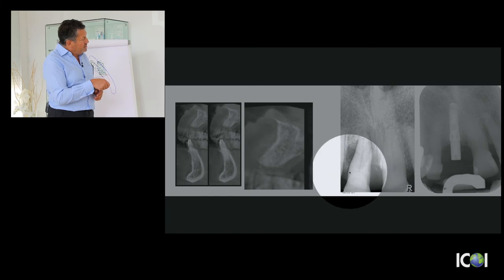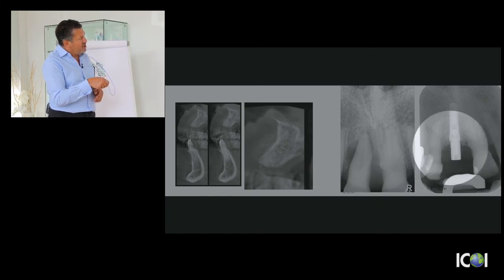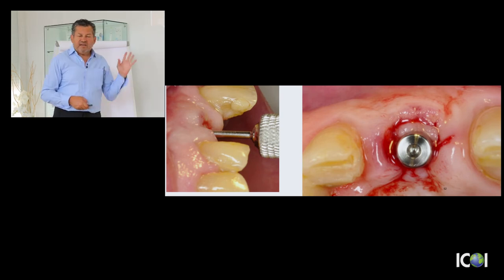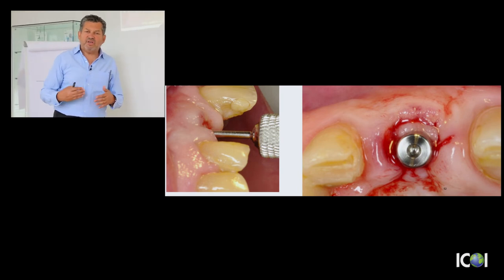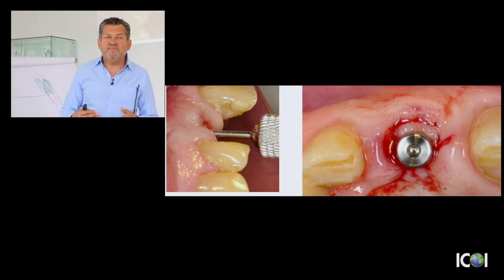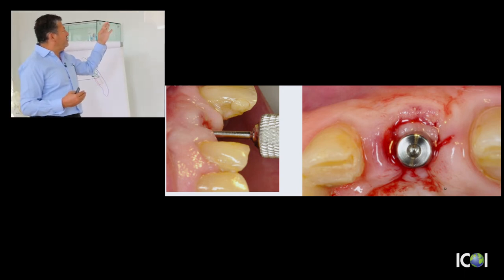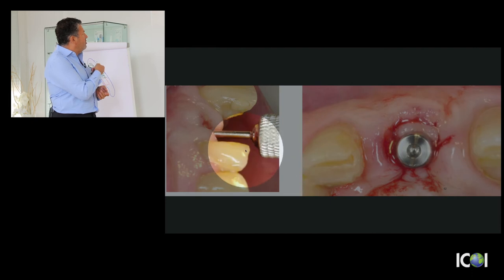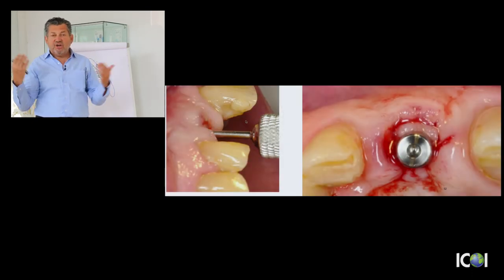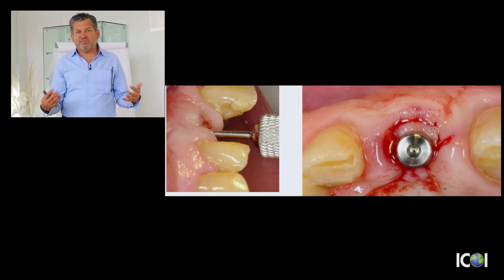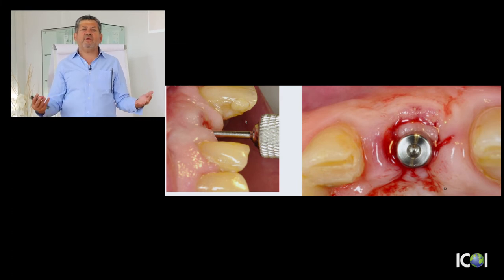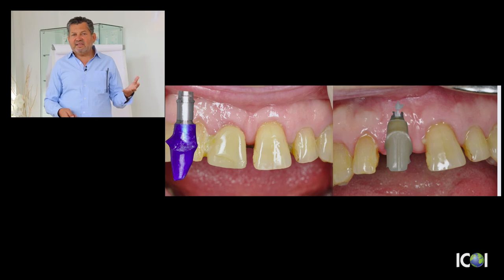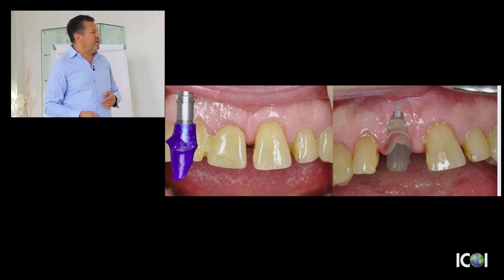After osseointegration of the implant, we wait another four to six months depending on the implant system. With the screwdriver placed in when removing the cover screw, the implant is in the ideal position — the shank of the screwdriver is slightly palatal from the incisal edge of the neighboring teeth. This means the socket preservation procedure laid the foundation for very good aesthetics. Our results and aesthetics became very predictable. The abutment design also plays a major role — we control the gingival margin with the crown, and the soft tissue is supported by the abutment.